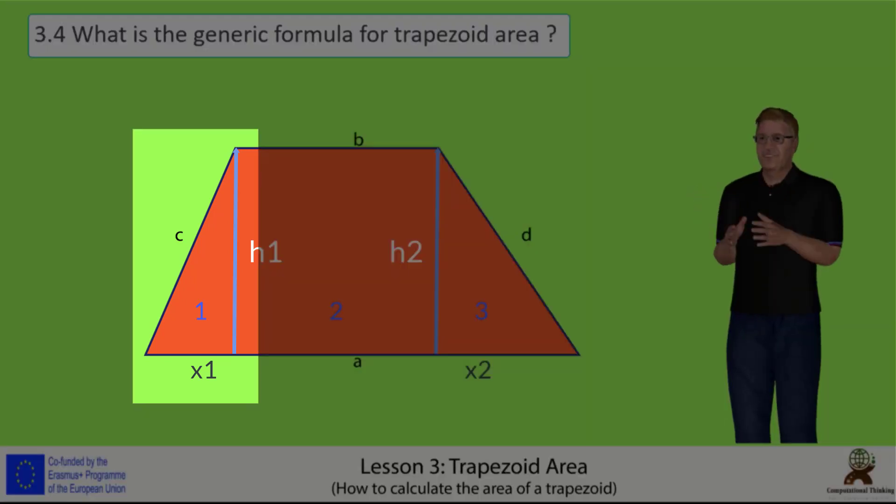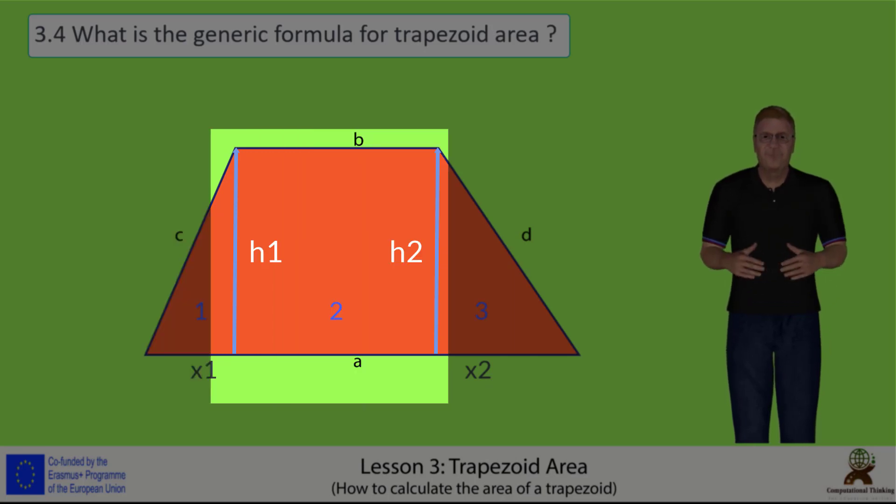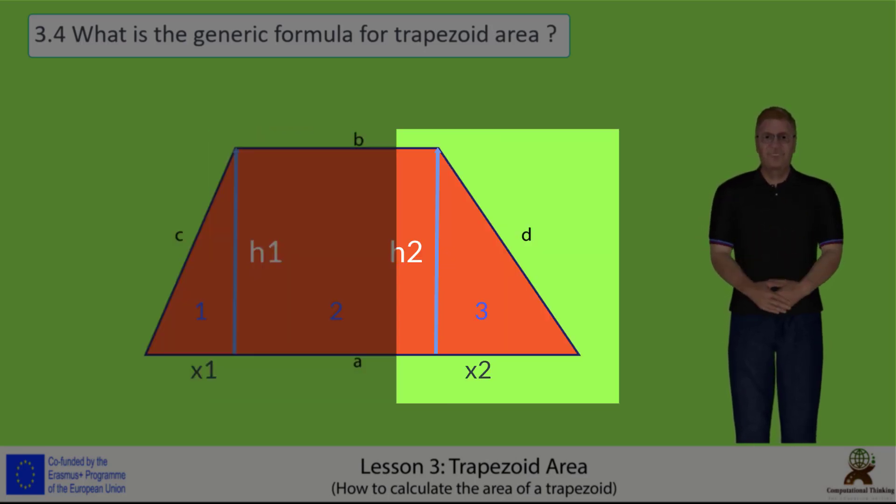1 is the leftmost right triangle. 2 is the next perpendicular rectangle. 3 is the rightmost right triangle.